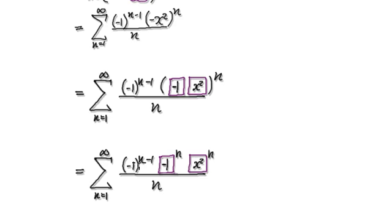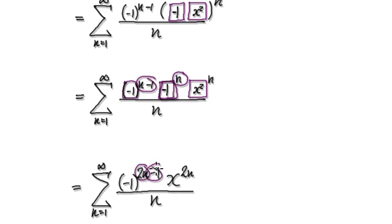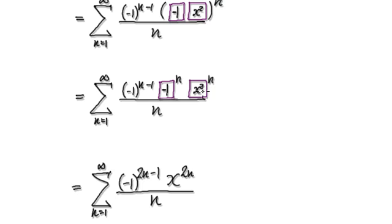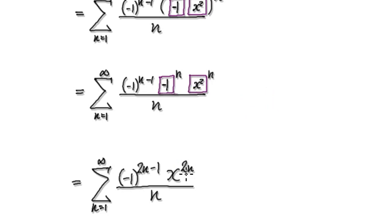Now, same base — you can simply add the exponents. This plus this will then give you 2n minus 1. And then here you've got x squared to the power of n. Get this times this — that will then give you this.